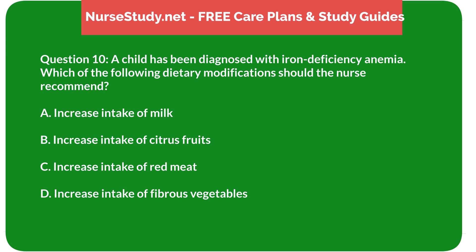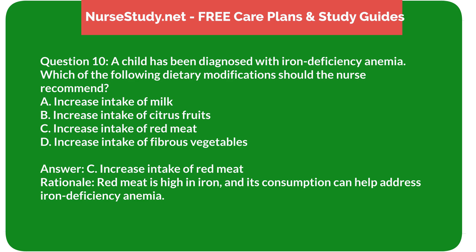Question 10: A child has been diagnosed with iron deficiency anemia. Which dietary modification should the nurse recommend? A) increase intake of milk, B) increase intake of citrus fruits, C) increase intake of red meat, D) increase intake of fibrous vegetables. Answer: C) increase intake of red meat. Rationale: Red meat is high in iron, and its consumption can help address iron deficiency anemia.